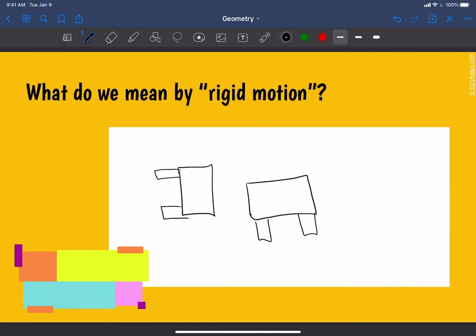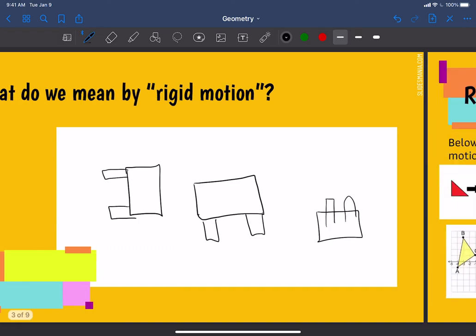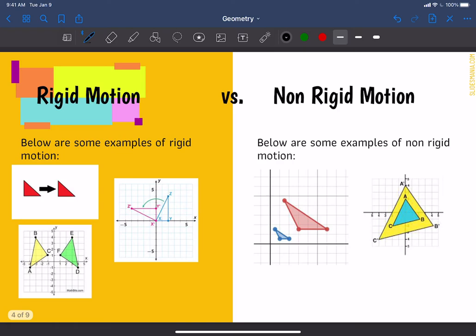Or I can flip the coffee table. So now it's on its back with the legs facing upward. So rigid motion just means a transformation on a shape that didn't change the size or the actual figure of that shape.